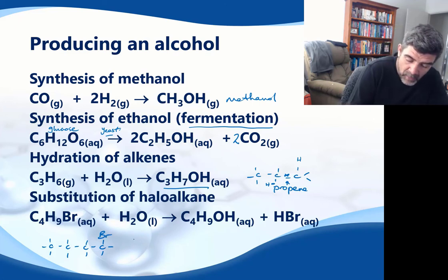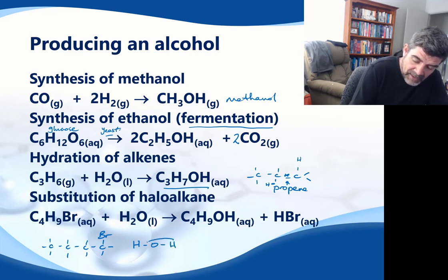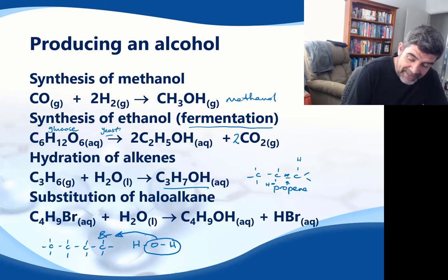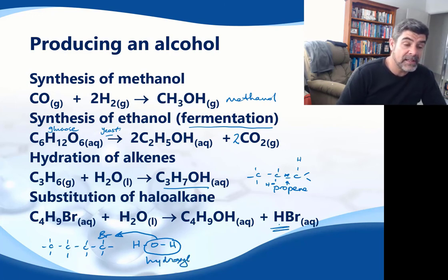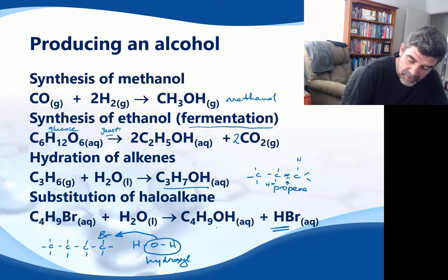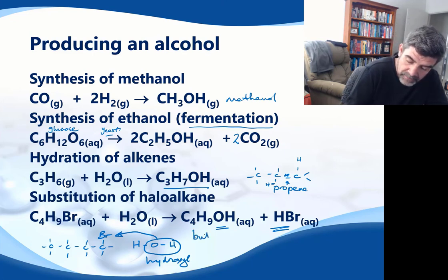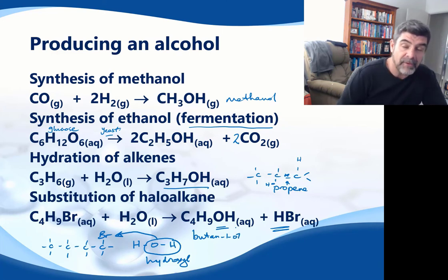What happens when we add the water molecule — an HOH molecule — is that we're going to add the OH hydroxyl group into the place where the bromine is currently sitting. That's going to cause a substitution, so the bromine is going to be substituted for the hydroxyl group. The bromine comes out of our organic structure and the hydroxyl group goes in. As a result, we will turn what I have drawn here as 1-bromobutane into butan-1-ol.